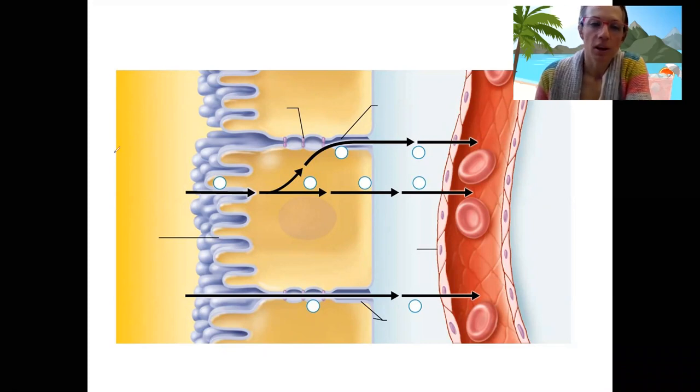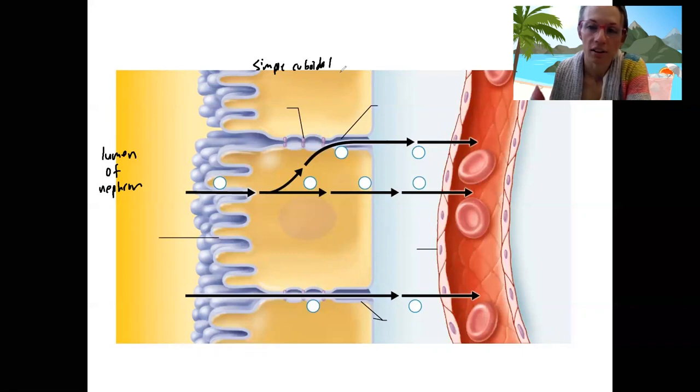What do you think is shown here? This is the lumen of our nephron. This is the epithelium, that simple cuboidal epithelium of the tubules of the nephron.